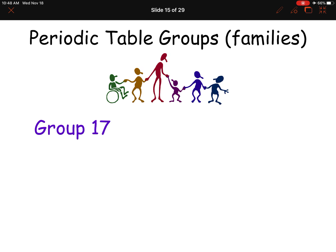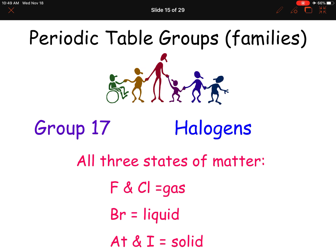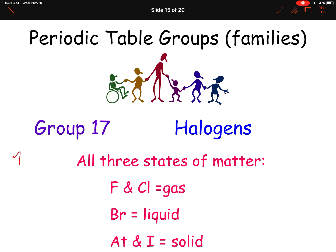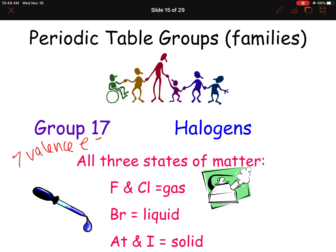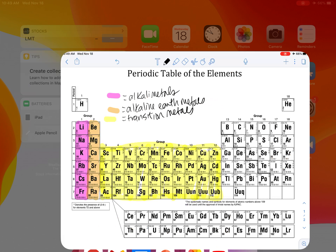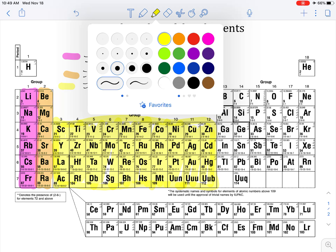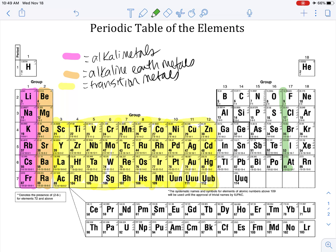Group 17 does have a name — these are called the halogens. This is a unique group. Group 17 has seven valence electrons. What's neat about group 17 is they have all three states of matter: fluorine and chlorine are gases, bromine is a liquid, and astatine and iodine are solids. Let's go ahead and color in group 17 as the halogens.